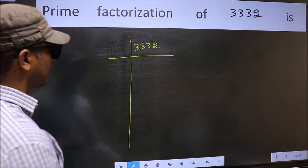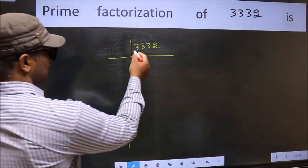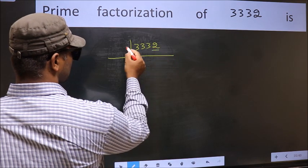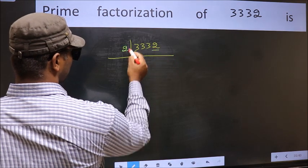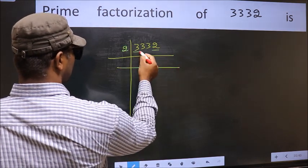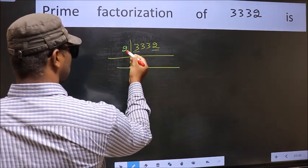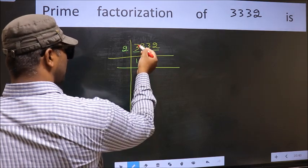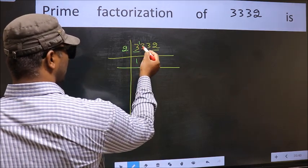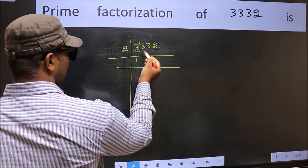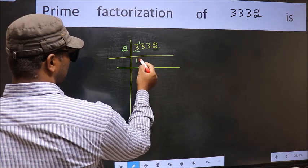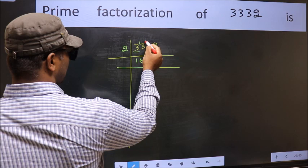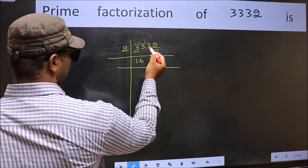Next, in this number, the last digit is 2, so take 2. First number: 3. A number close to 3 in the 2 times table is 2 once, which is 2. 3 minus 2 is 1, carried forward: 13. A number close to 13 in the 2 times table is 2 times 6, which is 12. 13 minus 12 is 1, carried forward: 13.